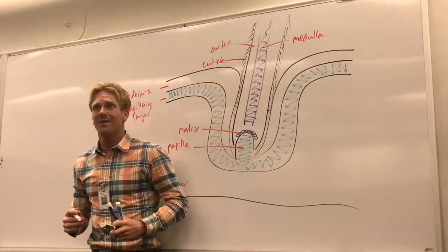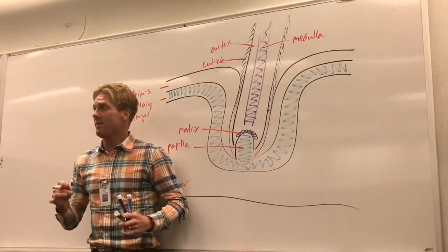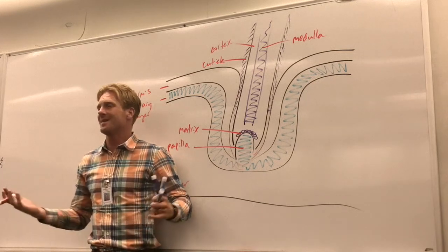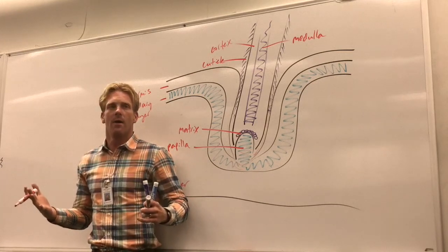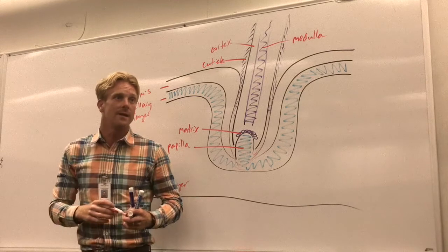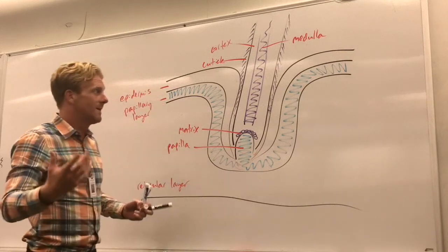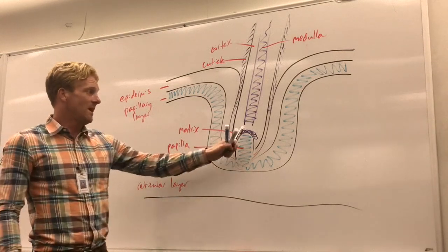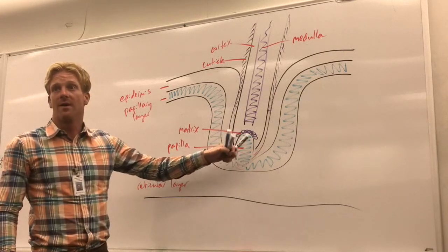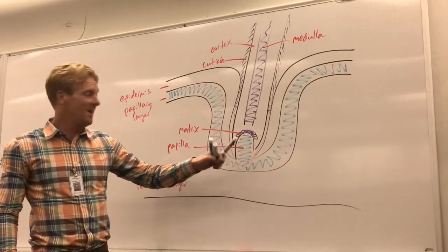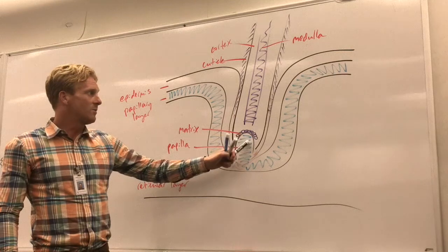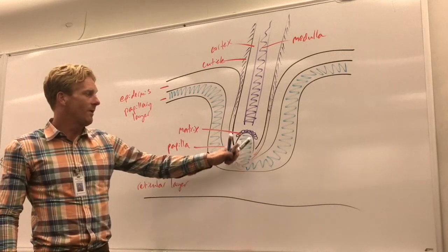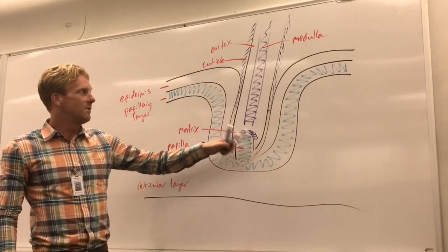Once these new cells grow, they're filled with keratin. It's similar to the keratin we find in our epidermis, but in this case it's called hard keratin, unlike the soft keratin that we find in our skin. Now these guys do a lot of work—they're rapidly dividing and they need a lot of nutrition. They get it from all those blood vessels in the hair papilla.